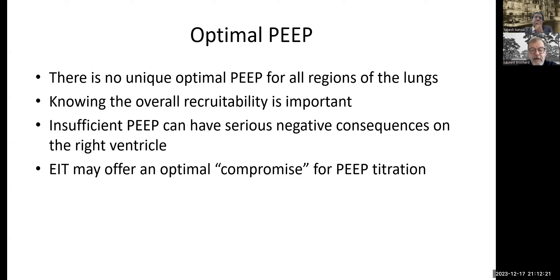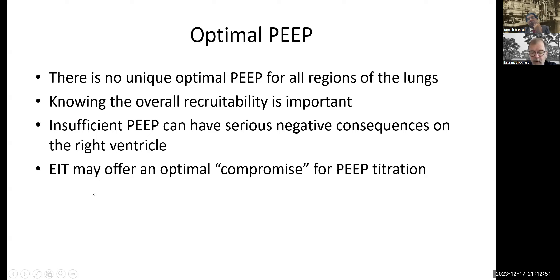From this data we can conclude: there is no unique optimal PEEP for all regions of the lung — you need to make a compromise. It is really important to know if the lung is recruitable, which is where the recruitment-to-inflation ratio is useful. Insufficient PEEP can have serious negative consequences on the right ventricle. EIT may offer an optimal compromise for PEEP titration.